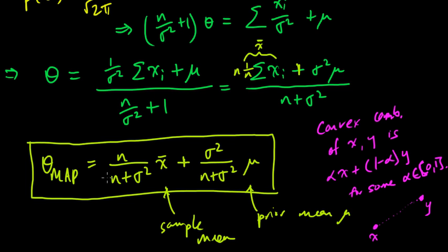So the nice thing about writing the MAP in this way is that you can think of the MAP as being sort of like the sample mean. So it's a special case of the sample mean. If sigma squared were 0, then this would be 0, and this would be n over n, which is 1, and you would get the sample mean.